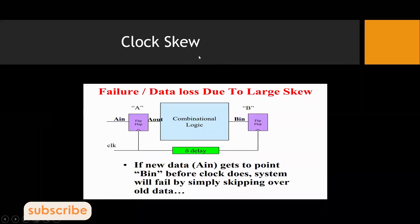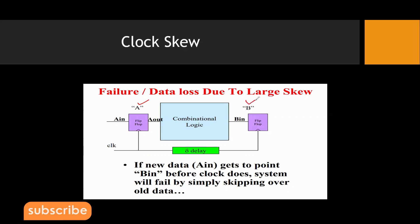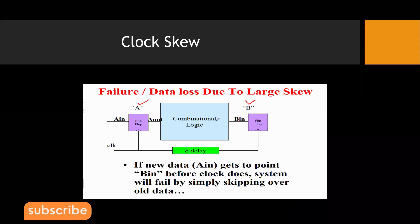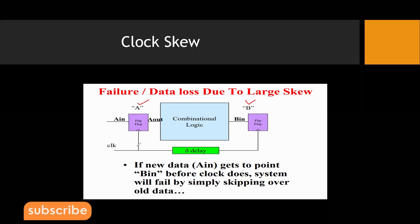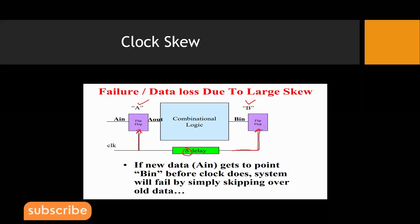So what happens if this skew is present in the design? We can have a failure or data loss due to large skew. In this figure there is one flip-flop called Reg A and another called Reg B. A_in is the input of flop A and A_out is its output, which is given to a combinational circuit whose output feeds B_in, the input to flop B. The same clock is given to both, but it is not arriving at the same time due to clock skew — it arrives at point B with some delta delay.